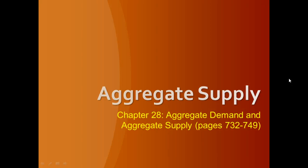Hey, welcome back. Today we're going to look at aggregate supply. Last time we looked at aggregate demand. Today we're going to look at aggregate supply and we're going to look at why the aggregate supply curve is upward sloping in the short run but vertical in the long run. We'll differentiate between short and long runs and talk about the impact of supply shocks and demand shocks on our short run equilibrium price and quantity, and also reasons why the supply curve may shift.